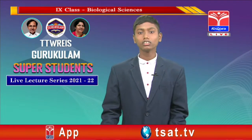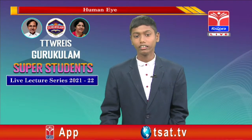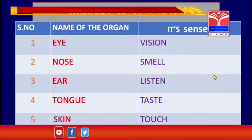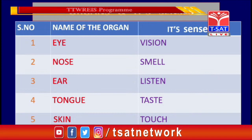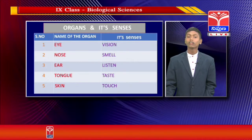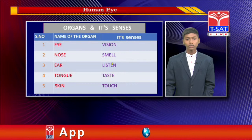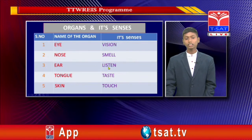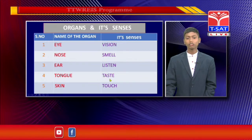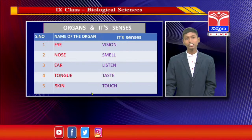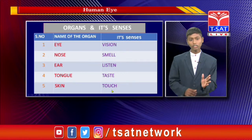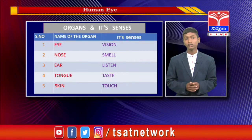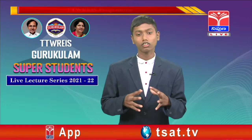Let us observe the table to understand even better. From the table, you can observe the organ and the sense it carries. The eye has the sense of vision, the nose has the sense of smell, the ear carries the sense of listening, the tongue carries the sense of taste, and the skin carries the sense of touch. These are called the sense organs of our body. There are 5 sense organs, and skin is the largest sense organ.